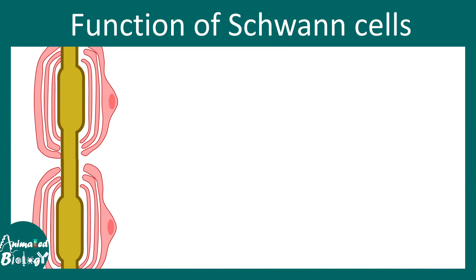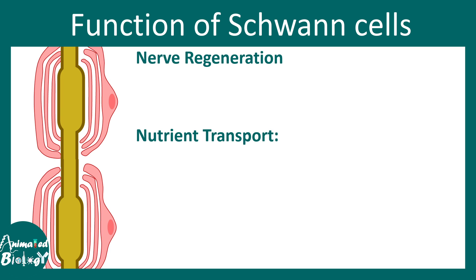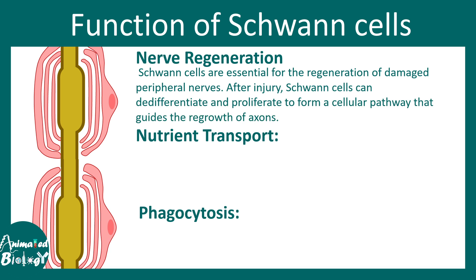Now let's talk about some other functions of the Schwann cells. Schwann cells help in nerve regeneration, nutrient transport, and phagocytosis. In the context of nerve regeneration, it's important to note that when there is an injury in the peripheral nervous system, Schwann cells play a key role — they de-differentiate and help in the process of neural regeneration.